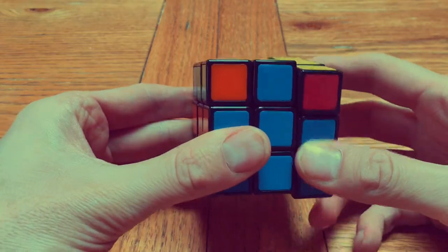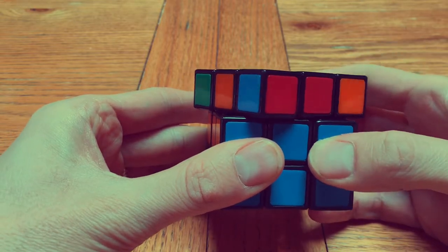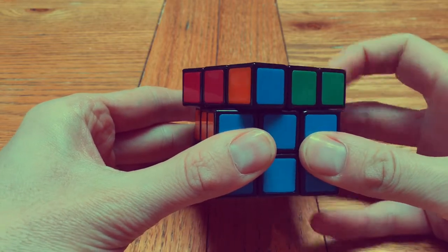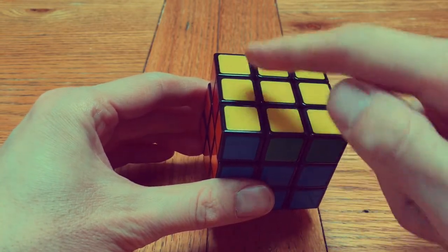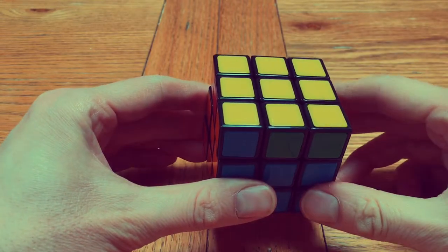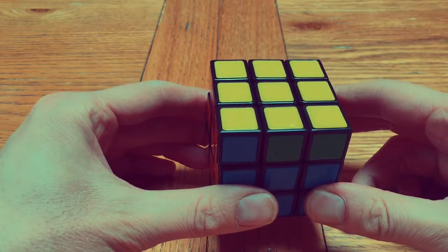Sometimes however you get a situation like this where all the cubes are mixed up. None are adjacent to where they should be and in fact what you need to do is swap the cubes diagonally, and there is a special algorithm for that which I'll show you now.